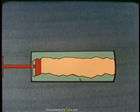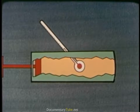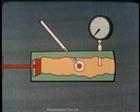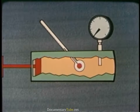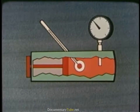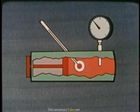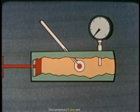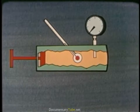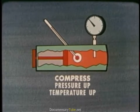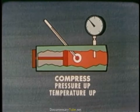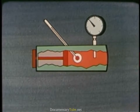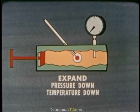Here's a container filled with gas. We add a thermometer to measure the temperature of the gas and a pressure gauge to measure its pressure. What happens if you push in on the piston? The pressure increases and the temperature increases. Now, let the piston out. The pressure goes down and the temperature goes down. The rule is: when a gas is compressed, the pressure goes up and the temperature goes up. It's true for any gas.